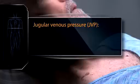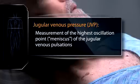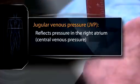Jugular venous pressure, or JVP, is a measurement of the highest oscillation point, or meniscus, of the jugular venous pulsations. This measurement reflects pressure in the right atrium, that is, central venous pressure.